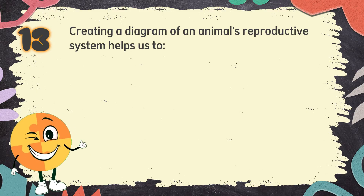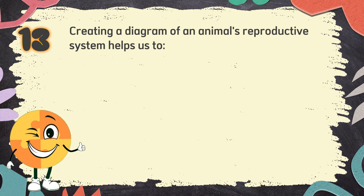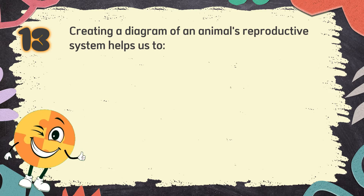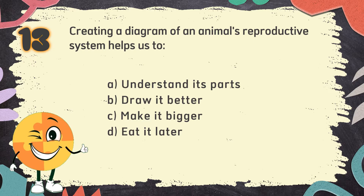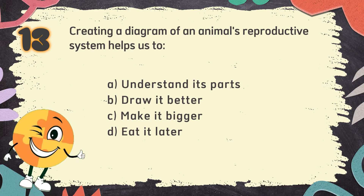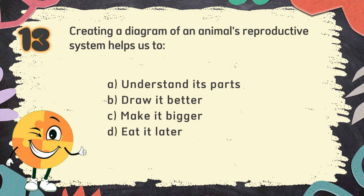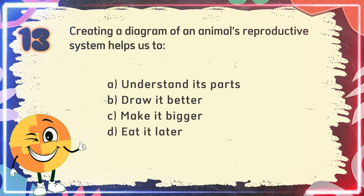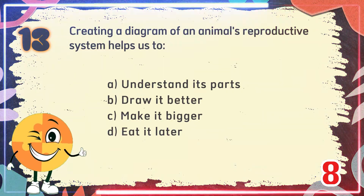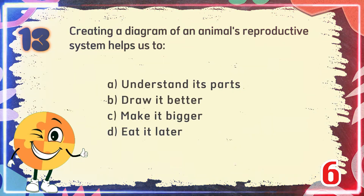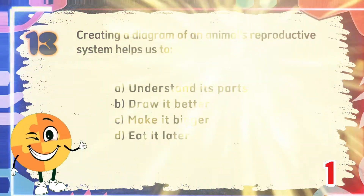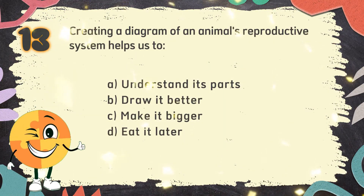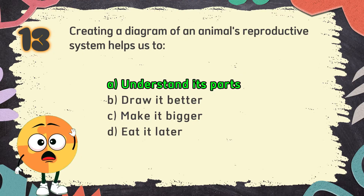Number 13: Creating a diagram of an animal's reproductive system helps us to — The choices are: A. Understand its parts, B. Draw it better, C. Make it bigger, D. Eat it later. The correct answer is A. Understand its parts.